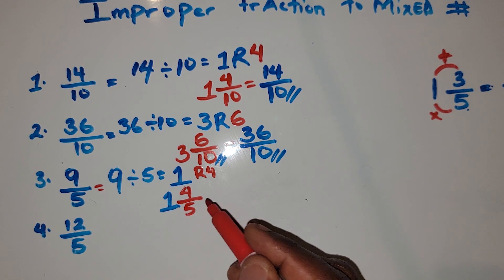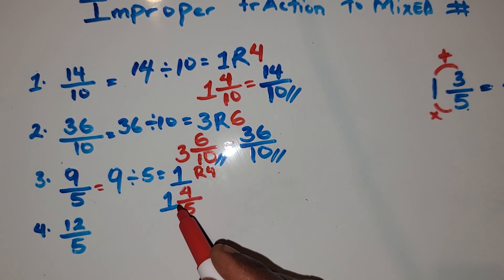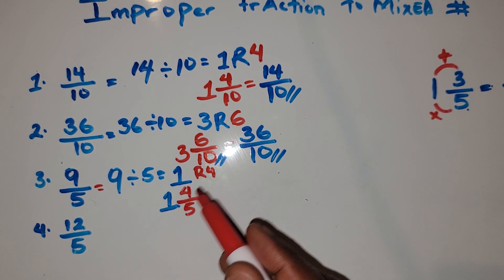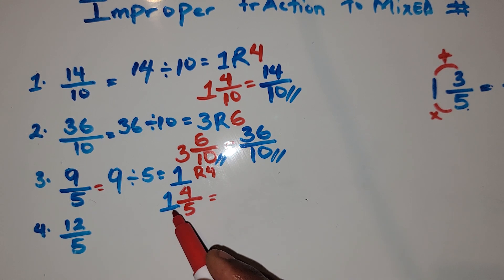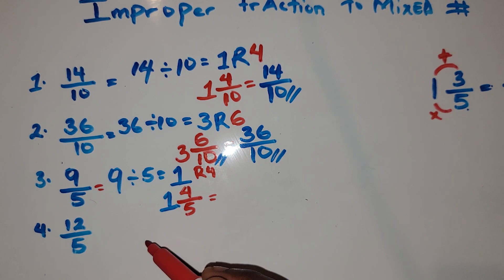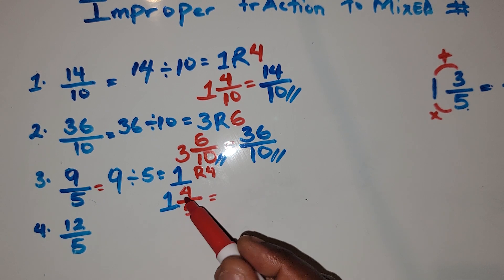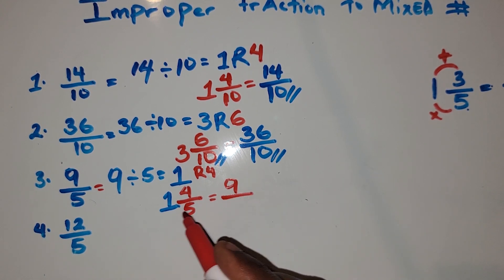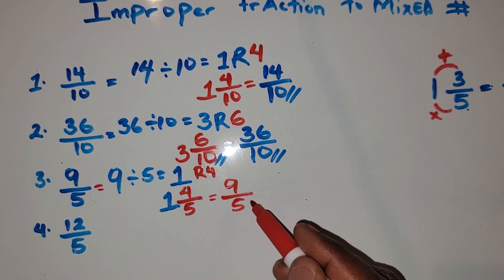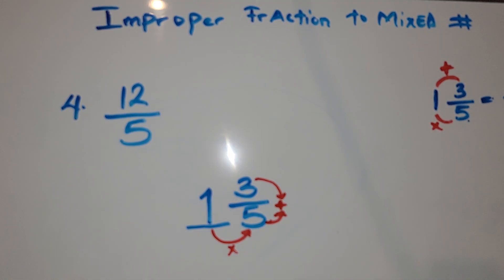The denominator stays constant at 5, so the mixed number is 1 and 4 over 5. To convert this back to an improper fraction, we say 1 times 5 is 5, plus 4 is 9. So the answer is 9 over 5.